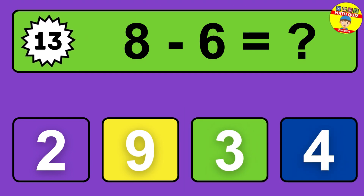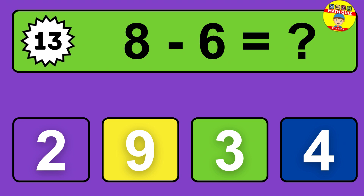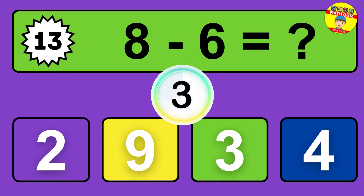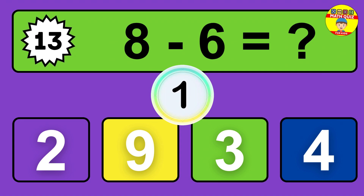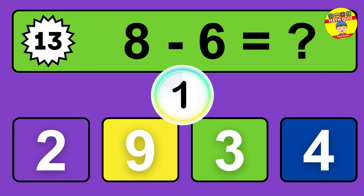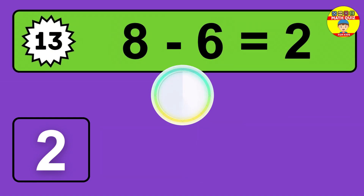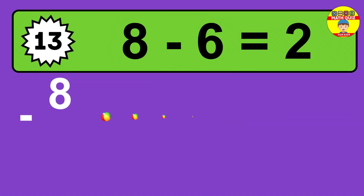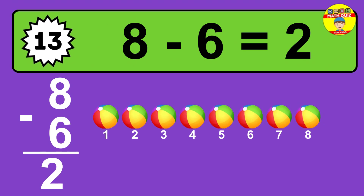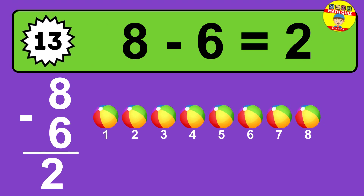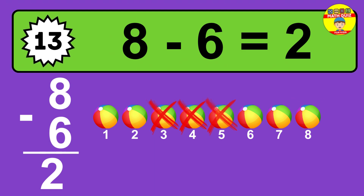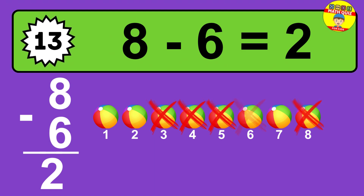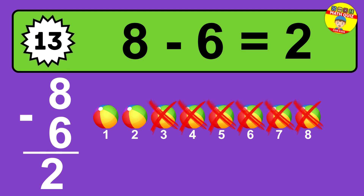Question thirteen: eight minus five equals what? So the answer is eight minus five is three. Let's count it — one, two, three.